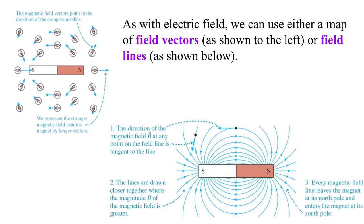As with electric field, we can use either a map of field vectors, which is shown off here to the left, or the field lines as shown below. And also like electric field, we'll generally talk about field lines and not so much maps of field vectors.